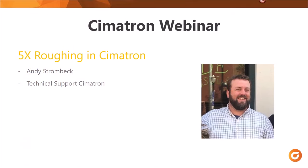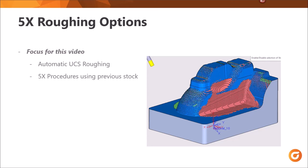Welcome to the Symmetron webinar today. We'll be looking at 5-axis roughing. My name is Andy and I work at Technical Support. The focus for this video will be on the automatic UCS function inside of roughing. We'll briefly look at the 5X procedures and being able to use the previous stock already in files.